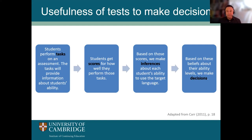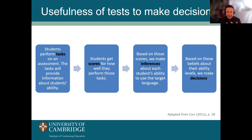Typically in language assessment, students or candidates — test takers — perform tasks, and those tasks provide information about the student's language ability. Students get scores for how well they perform those tasks. Based on those scores, we make inferences about each student's ability to use the target language. A test usually only gives a snapshot of a person's language ability at that moment in time, so we have to extrapolate and assume their wider language ability is representative of their performance. Based on these beliefs about their ability levels, we are able to make decisions.